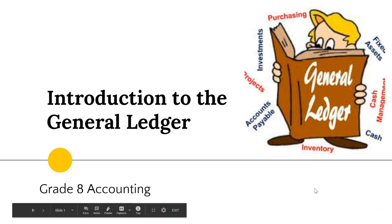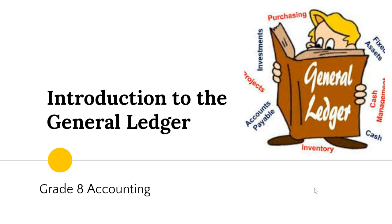This is the introduction to the general ledger. In terms of where we are in accounting, we've looked at transactions happening — the owner investing money in the business, purchasing stationery, purchasing equipment, renting property. We've looked at recording source documents: receipts and cash register rolls in the cash receipts journal, and check counterfoils in the cash payments journal.